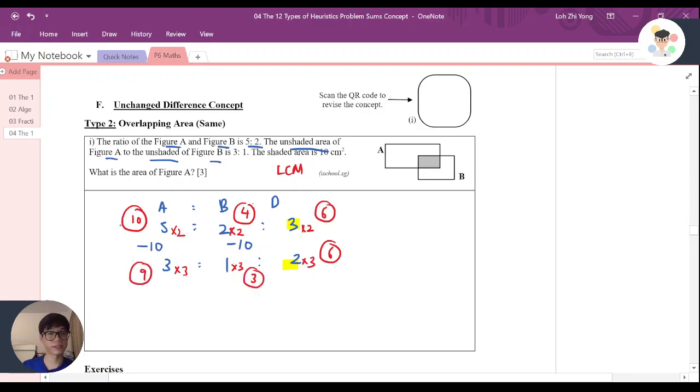So as you can see here, 10 becomes 9, loss of 1 unit, and that 1 unit is 10. 4 to 3 is loss of 1 unit, and that 1 unit is 10. So if 1 unit is equal to 10,